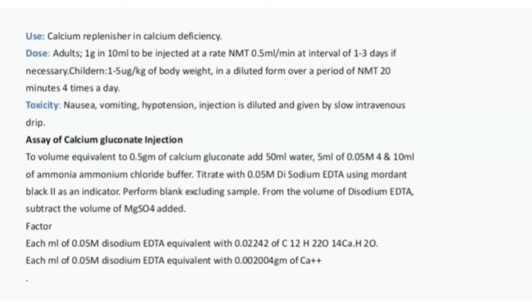Use: Calcium replenisher in calcium deficiency. Adults: 1 gram in 10 ml to be injected at a rate of NMT 0.5 ml per minute at intervals of 1 to 3 days if necessary. Children: 1 to 5 mcg per kg of body weight in diluted form over a period of NMT 20 minutes, 4 times a day. Toxicity: Nausea, vomiting, hypotension. Injection is diluted and given by slow intravenous drip.